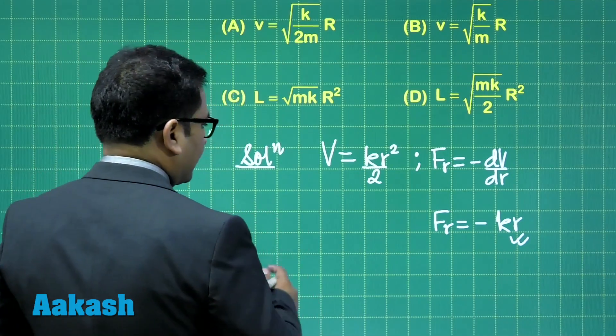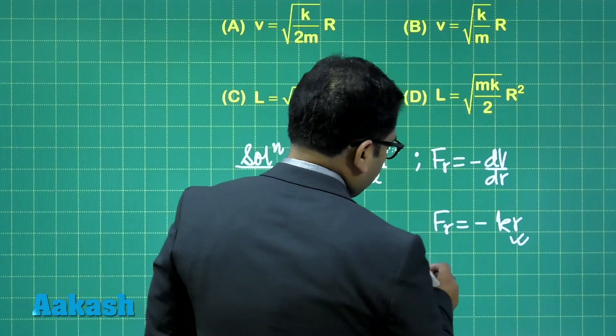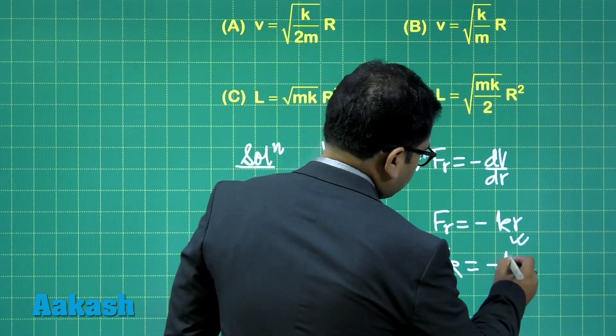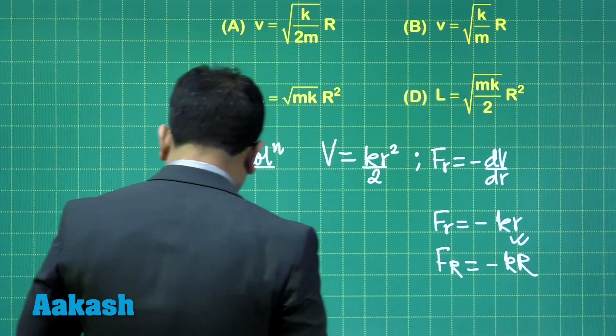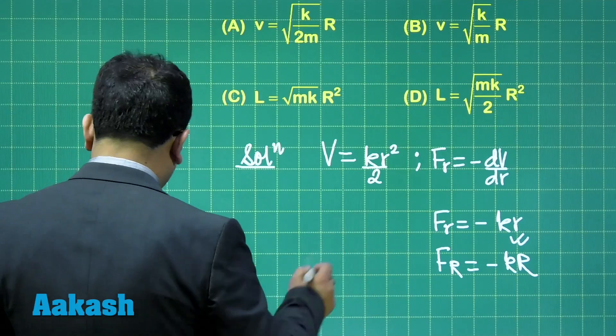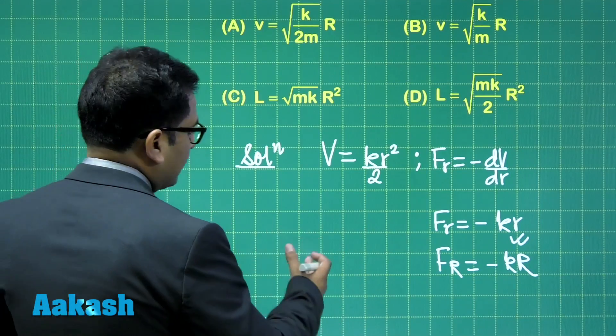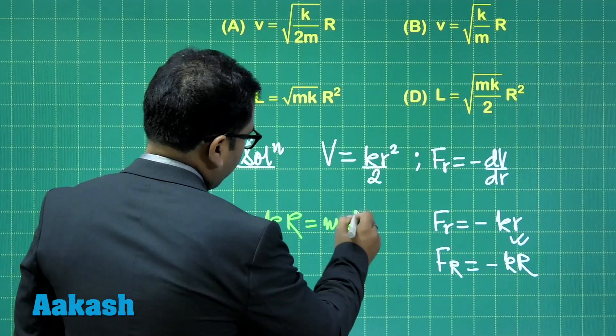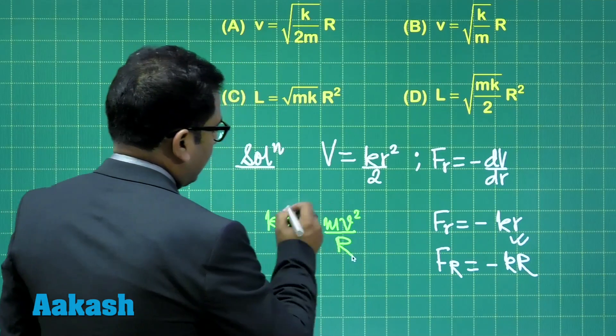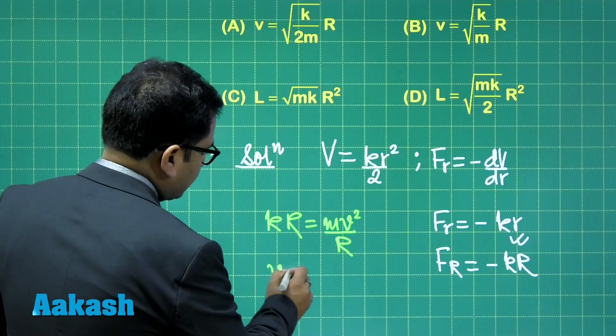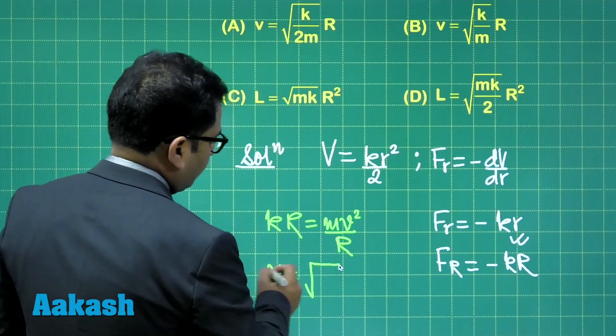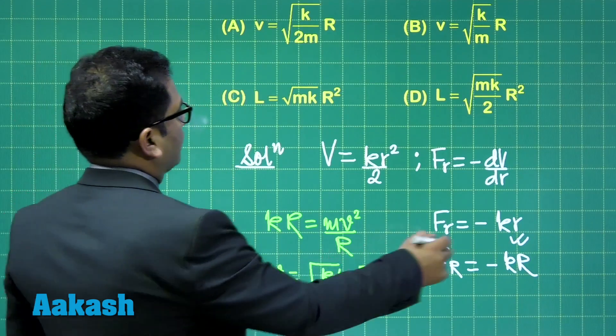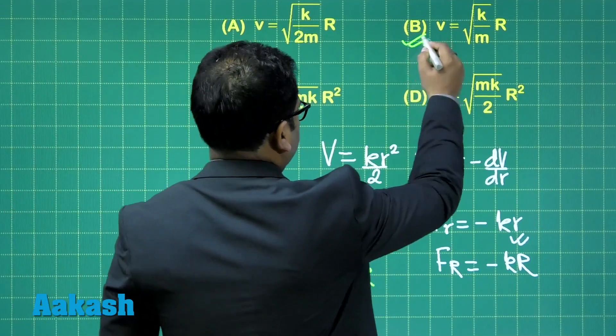Now, this is the force. And here, what we can do is that, since my particle is moving at a distance r equals to capital R, so that force is going to be this much. And now with this particular force, we'll try to see the equation, and that will give k r equals to mv squared by r, and that v is going to be root of k by m multiplied by r. So that now gives me option number b as the correct option.